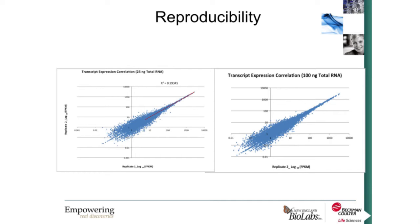One of the great selling points of the Biomek is the ability to create up to 96 libraries simultaneously. Reads were mapped back to the reference using TopHat2 and put through Cufflinks to look at transcript expression correlation for both 25 nanogram and 100 nanogram total RNA inputs. We have very high R-squared correlations of up to 0.99 between 25 nanogram replicates, and our 100 nanogram libraries also show very high within-group correlation.